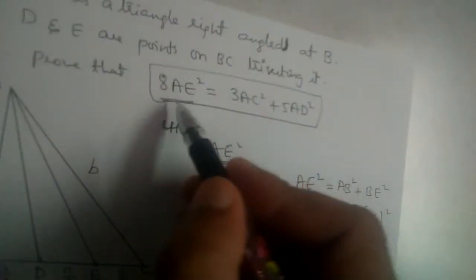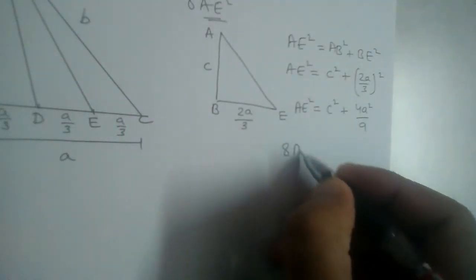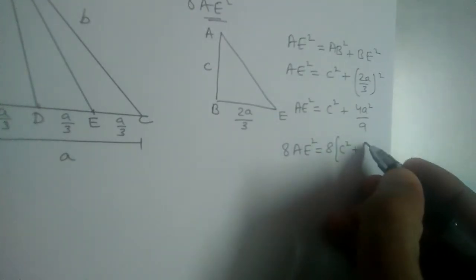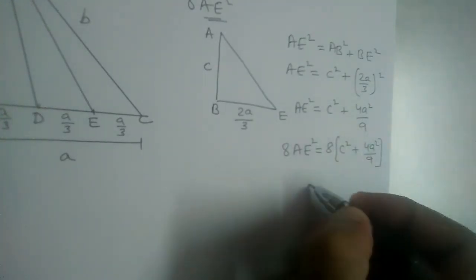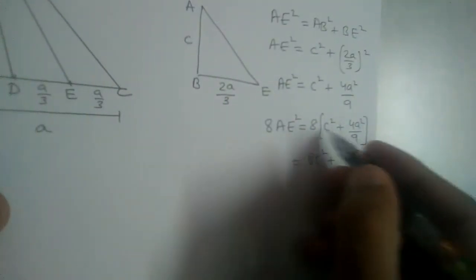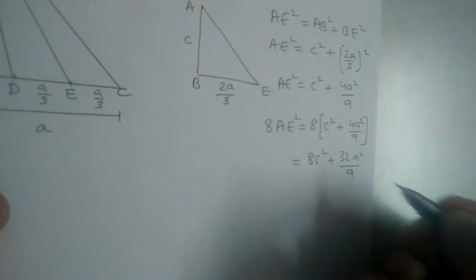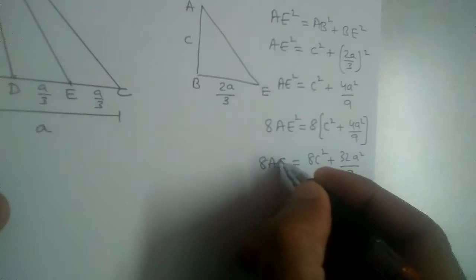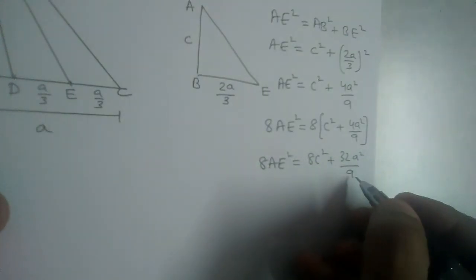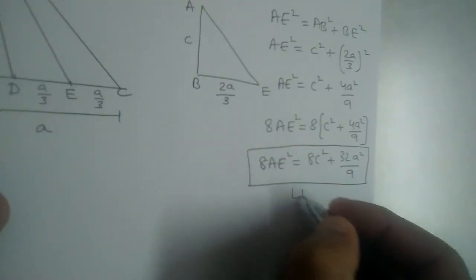Now we need 8AE². Multiplying both sides by 8: 8AE² = 8(c² + 4a²/9) = 8c² + 32a²/9. This is the LHS we obtained.